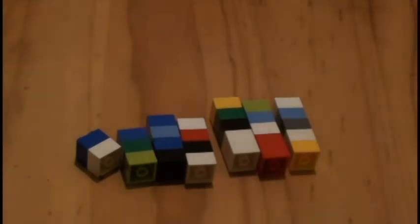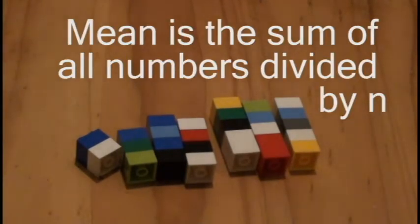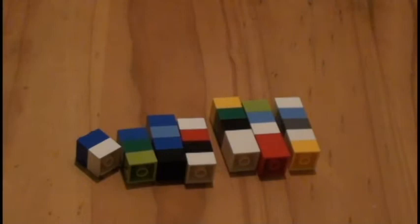The first type of average is mean. Mean is the sum of all numbers divided by n. We use mean when we're talking about any type of averages that we want to find. So if you wanted to see what the average temperature was one week, you would add all the temperatures together and then you would divide by seven. But let's see how we can do it with Legos.